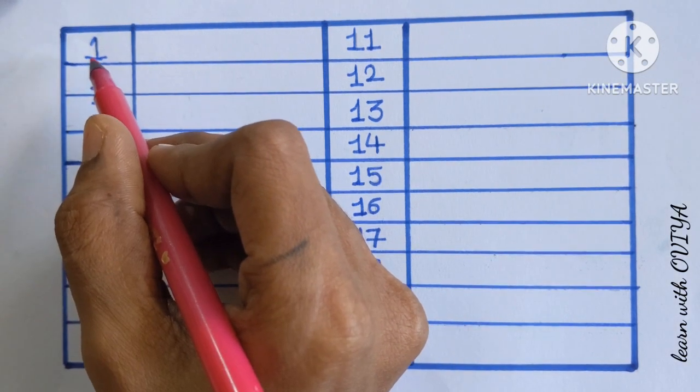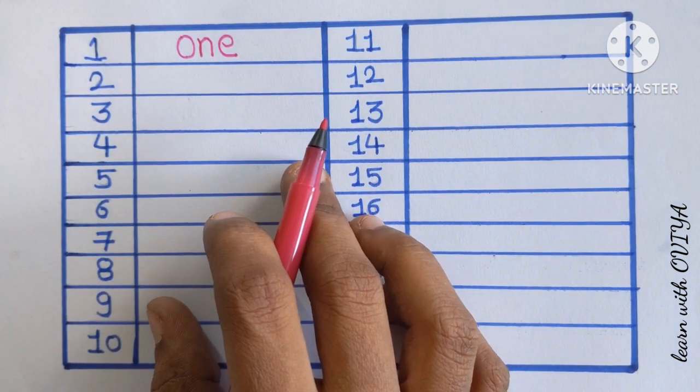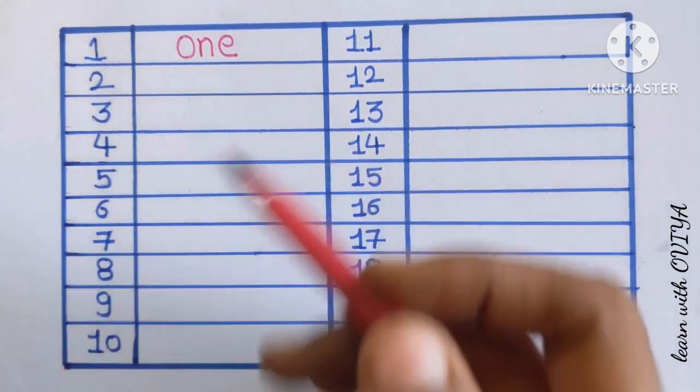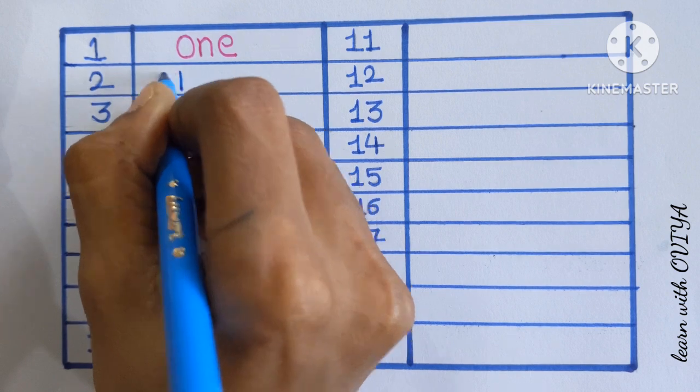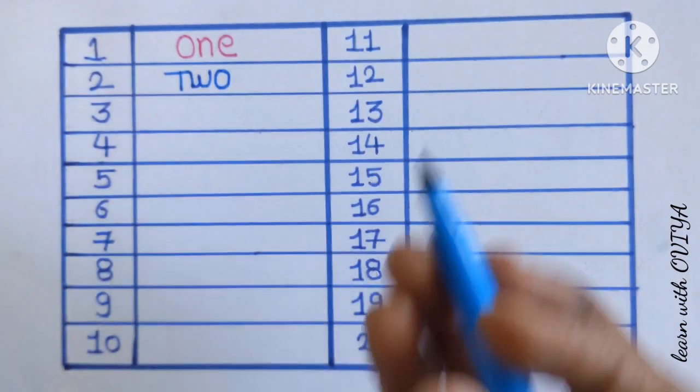So, at first, number 1. O-N-E. 1. Can you say that? 1. O-N-E. 1. Number 2. T-W-O. 2.